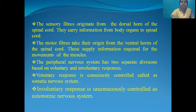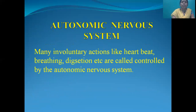The peripheral nervous system has 2 separate divisions based on voluntary and involuntary responses. Voluntary responses, which are consciously controlled, are called the somatic nervous system. Involuntary responses, which are unconsciously controlled, are called the autonomic nervous system. Many involuntary actions like heartbeat, breathing, and digestion are controlled by the autonomic nervous system.